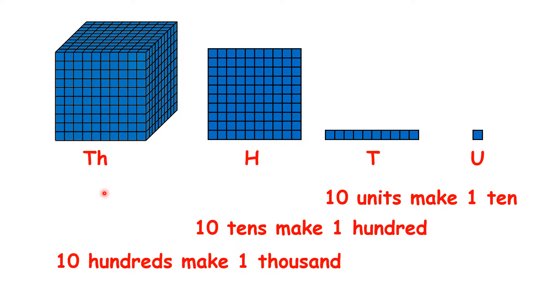Now when you have ten hundreds, you have a thousand, so you can imagine that these hundred squares are really 3D, and if we have ten hundred squares stuck to each other, we have one thousand, so we show a thousand here as a cube.